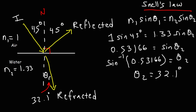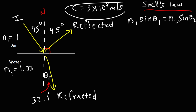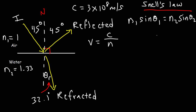Another important fact is the speed of light. The speed of light is not always 3 times 10 to the 8 meters per second — it changes based on the material it is traveling in. That value is the speed of light in a vacuum. The speed at which light moves depends on the material, and you can calculate it using: speed equals the speed of light divided by the index of refraction.